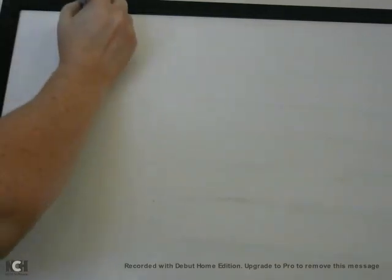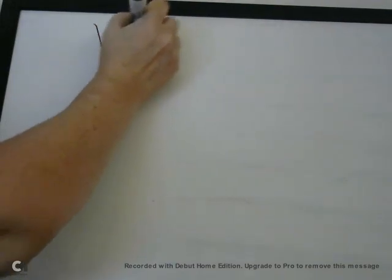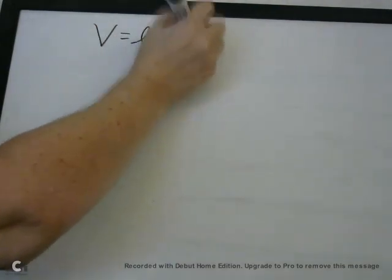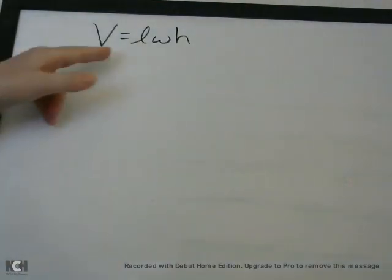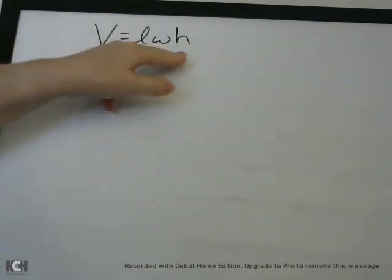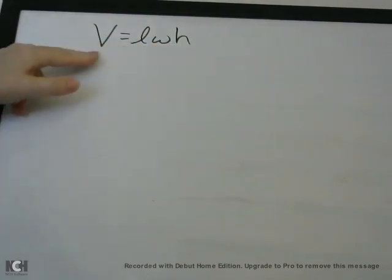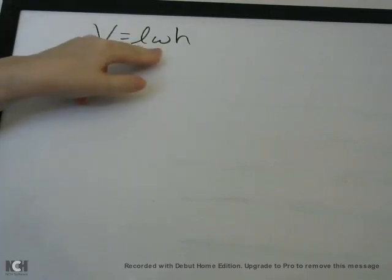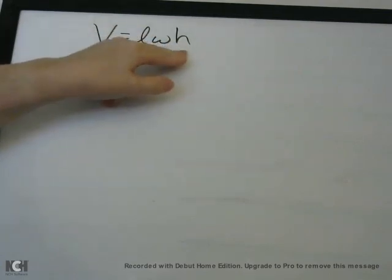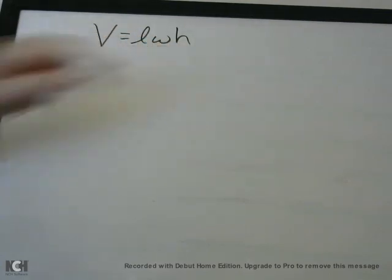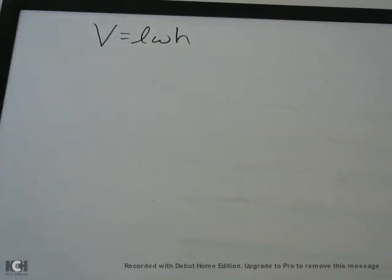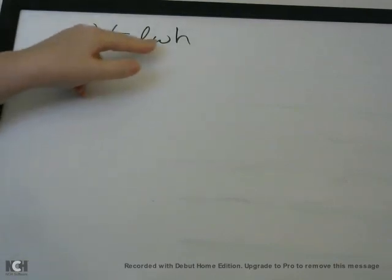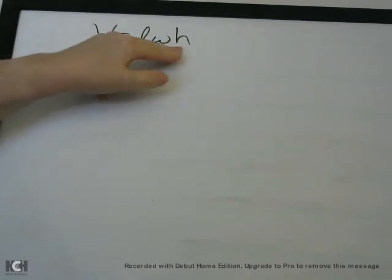If you look on your formula sheet, you will see the formula for the volume of a rectangular prism, and it's V equals LWH. Volume equals L, which stands for length, W stands for width, H stands for height. And remember, when you have three variables next to each other, that means multiplication — so it's volume equals length times width times height.